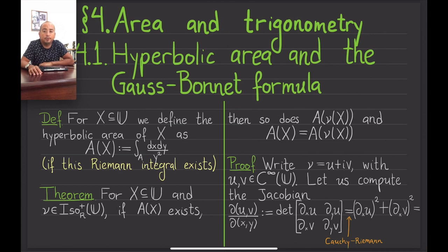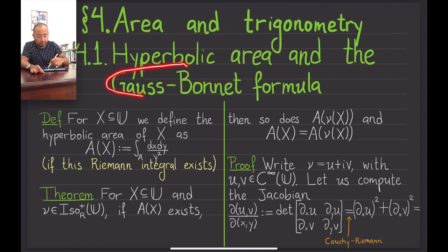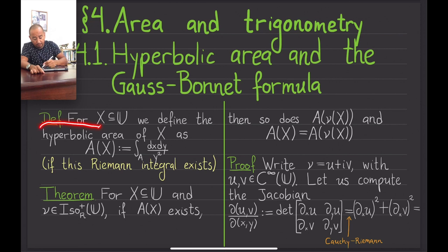We have developed a basic study of some of the models of the hyperbolic plane — namely the hyperboloid, the upper half plane, and the Poincaré disc. Having spoken about those, let us move on to this short chapter about hyperbolic area and hyperbolic trigonometry. Today we are going to cover hyperbolic area and use those facts to prove the famous formula of Gauss-Bonnet for the area of a hyperbolic triangle.